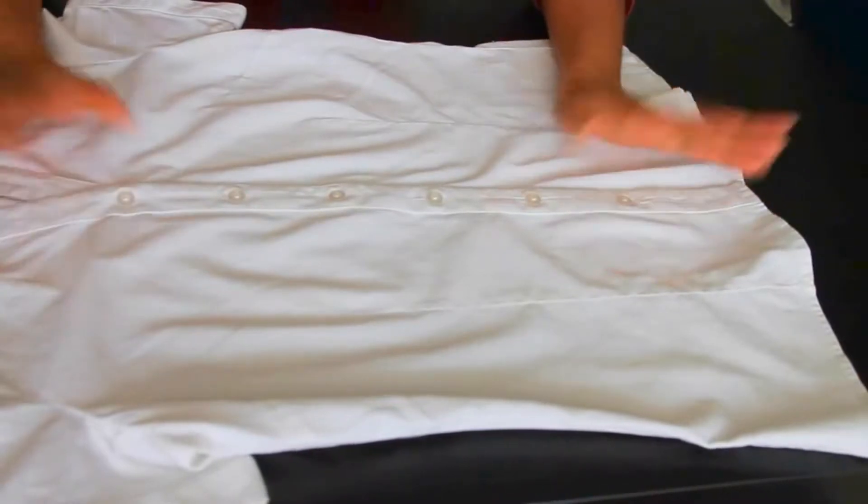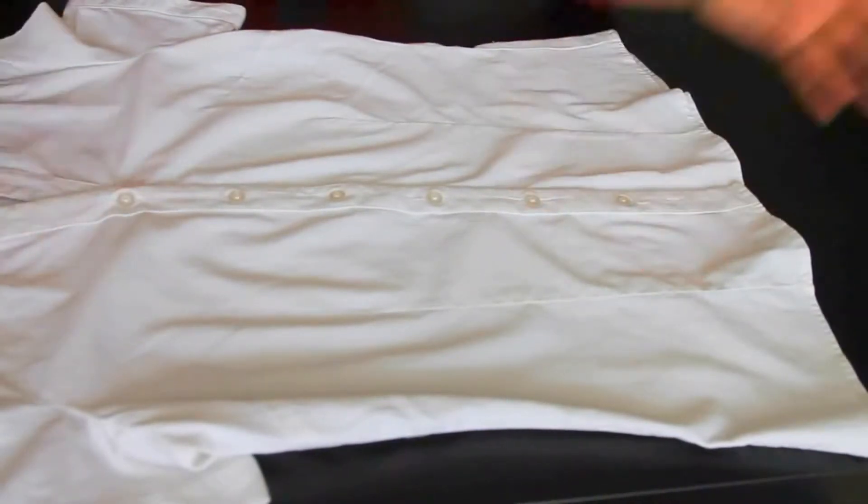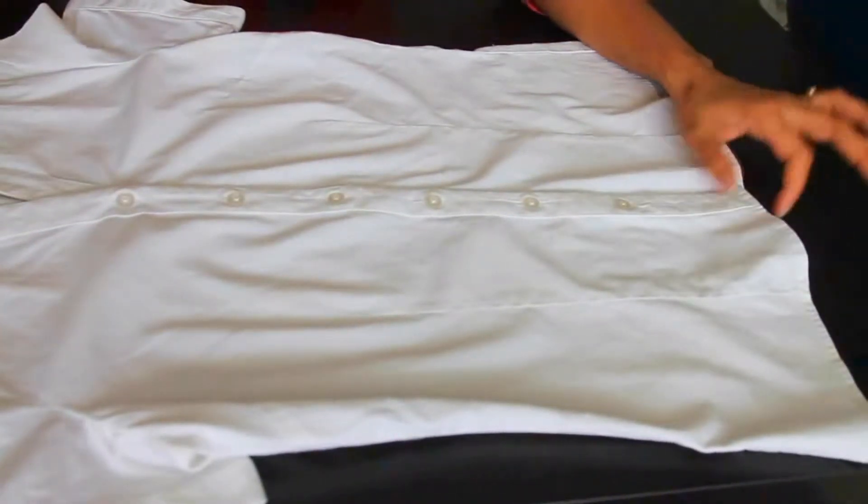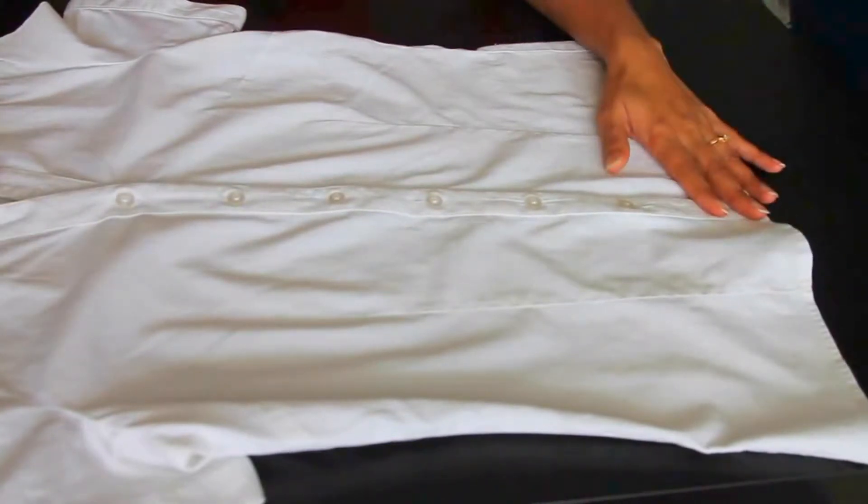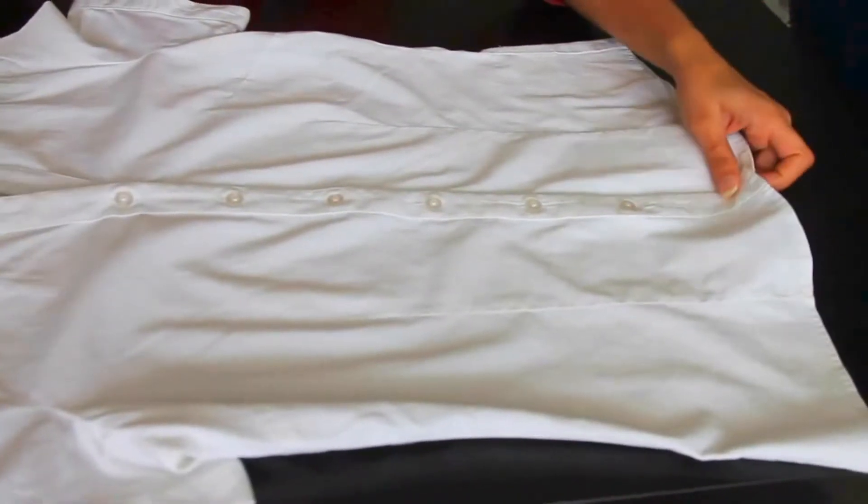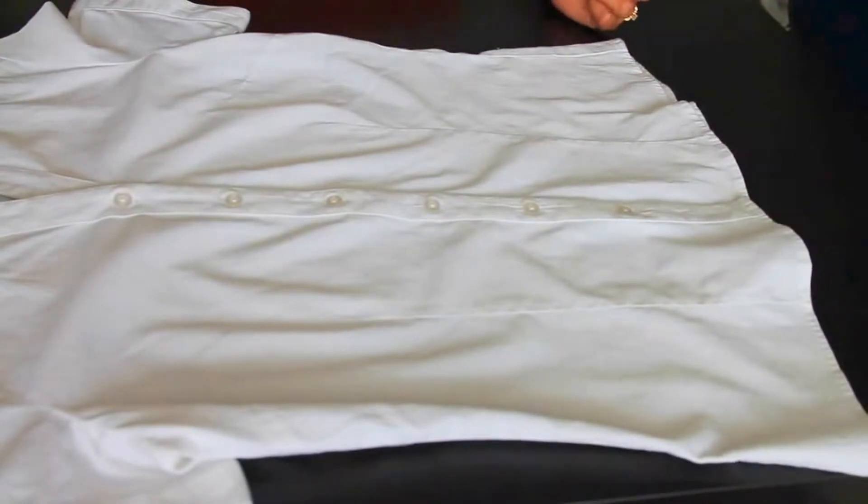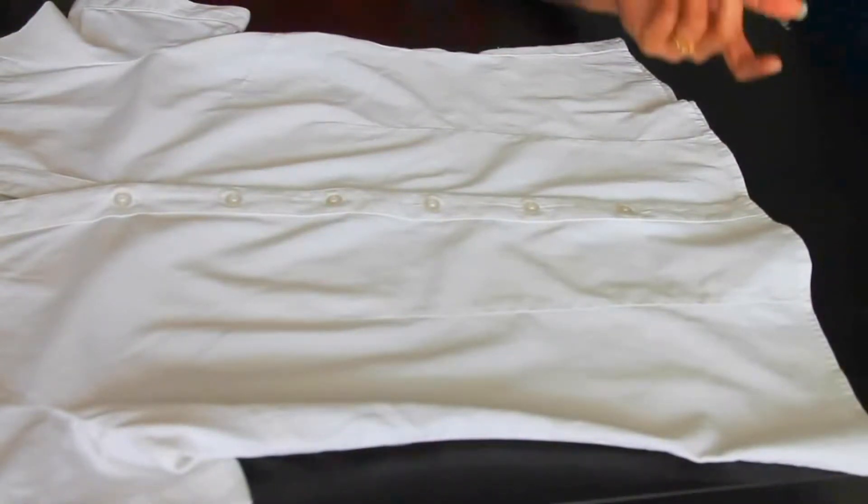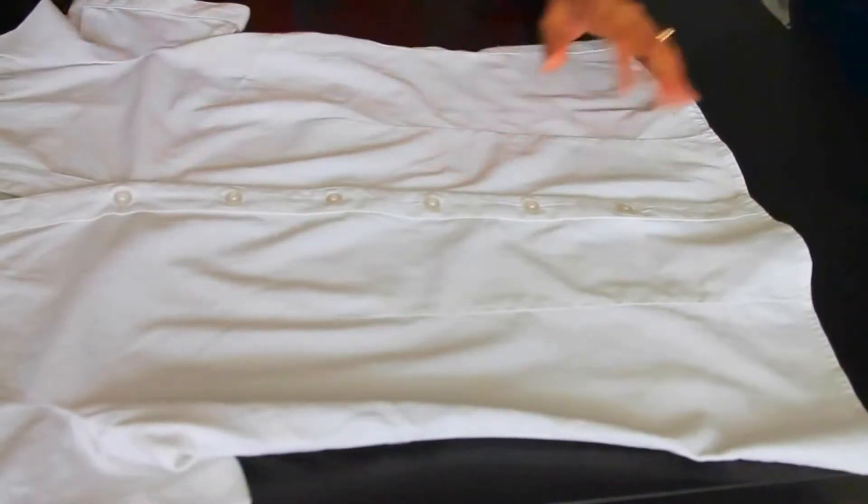So let's get started. First thing you're going to need is a shirt of your size, a pair of scissors, and something to mark with. I have a pencil here because this is a light color and my white chalk won't really help me.